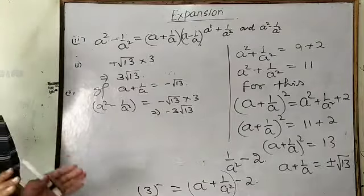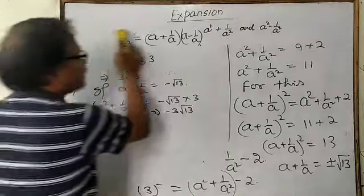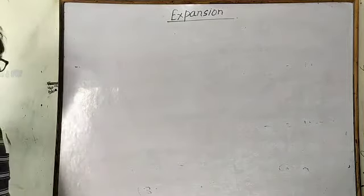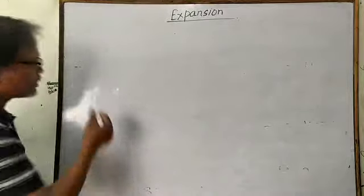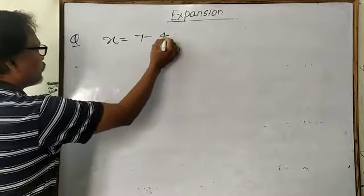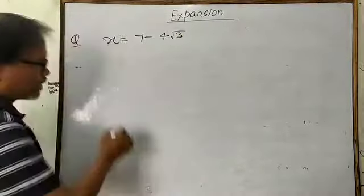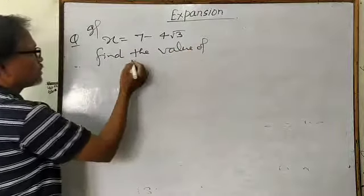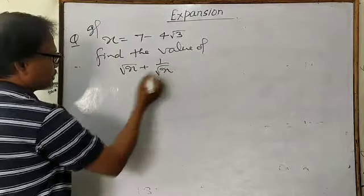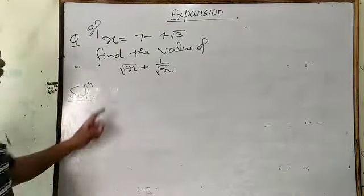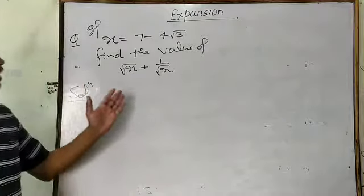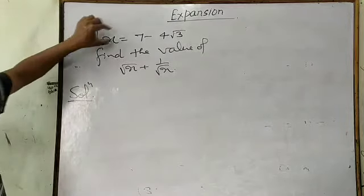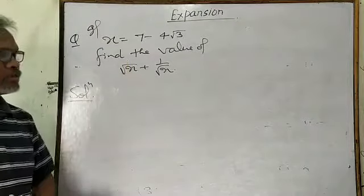So this is the first type of question. Now, the second type of question: if you have to find the value of root x plus 1 upon root x, and you are given x equals 7 minus 4 root 3. If you try to substitute x directly inside the root, then that will be difficult.